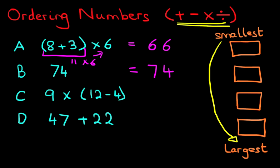How about C? Again, we start with the brackets. We've got 12 minus 4. 12 minus 4 is 8. And then we've got 9 times what is in the brackets, which is 8. 9 times 8 is 72.